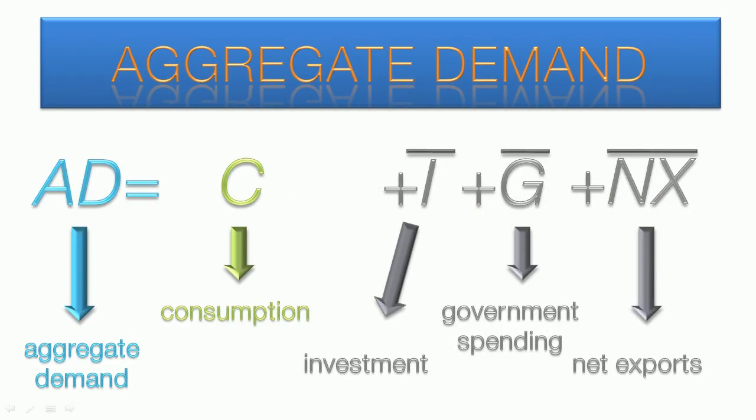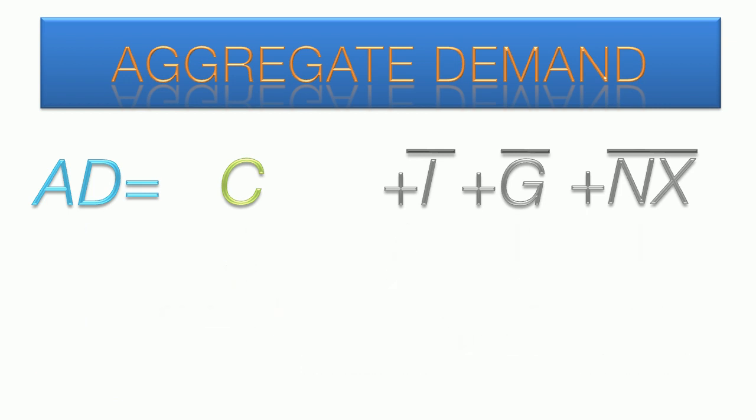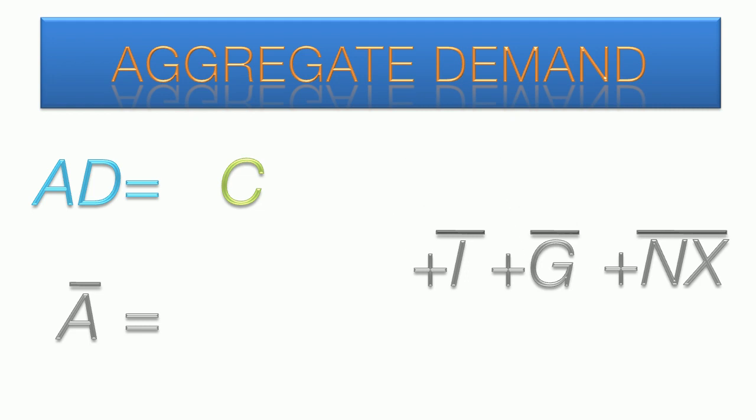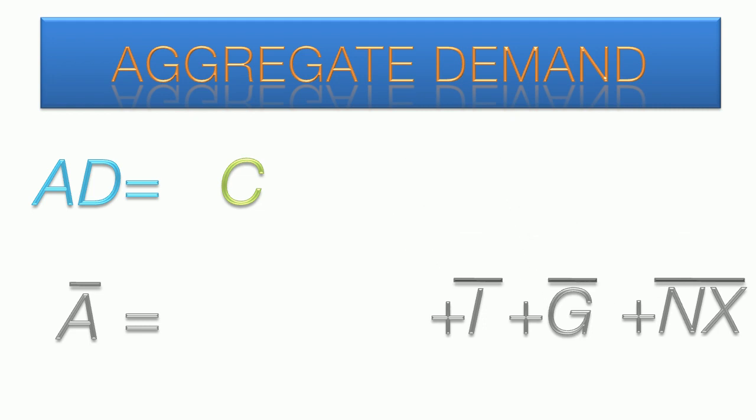Next we incorporate this updated consumption function into the aggregate demand equation. The first step is to separate the factors into exogenous and endogenous. Exogenous demand is represented by A-bar. Investment, government spending, and net exports are exogenous because they aren't affected by national income in this model, so their value won't change when income changes. These factors will be grouped together at the bottom beside A-bar.